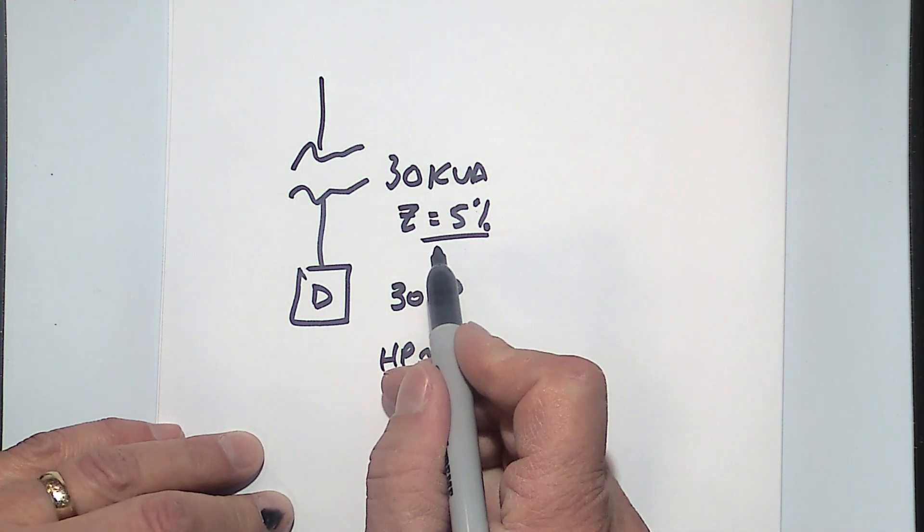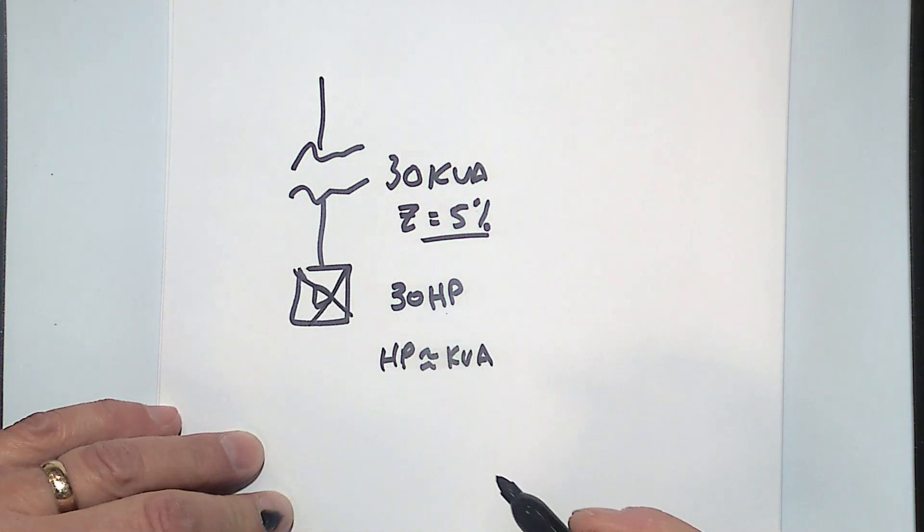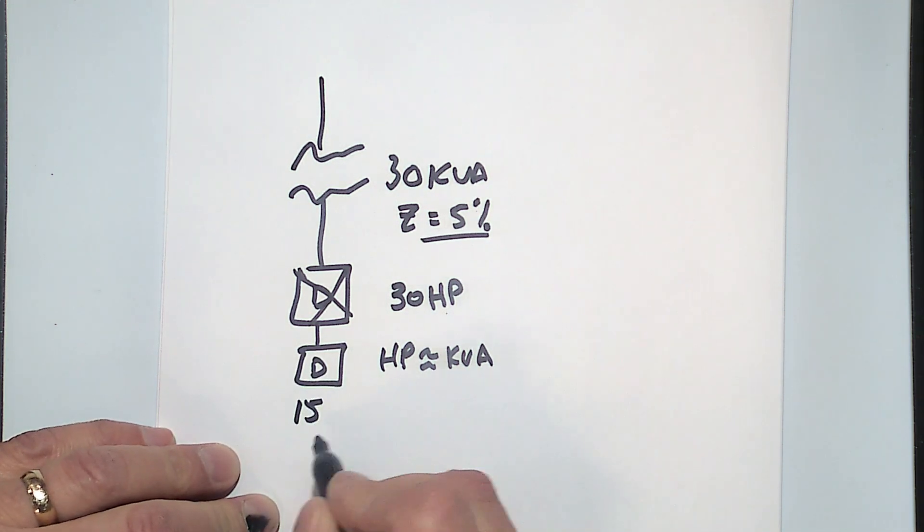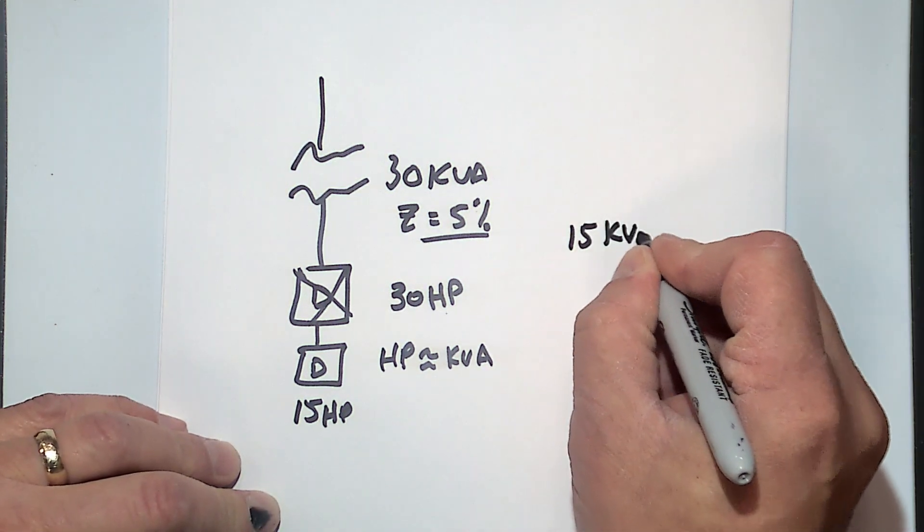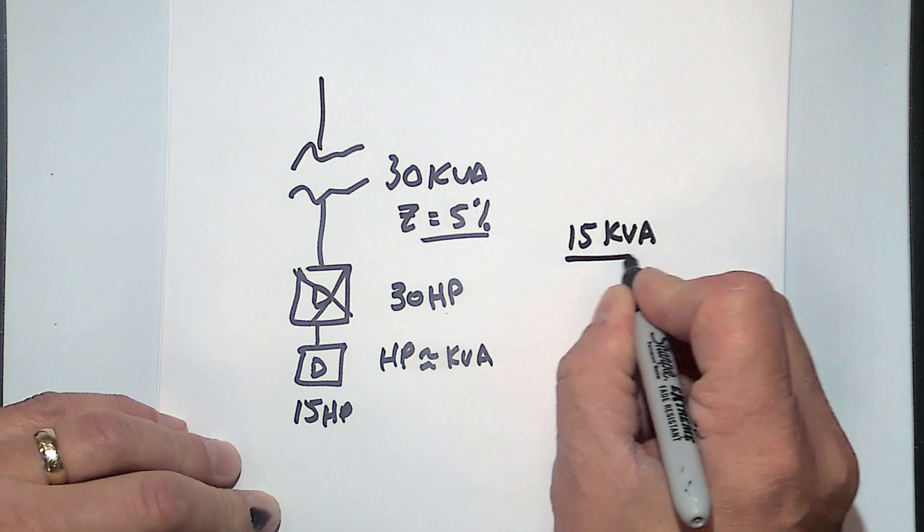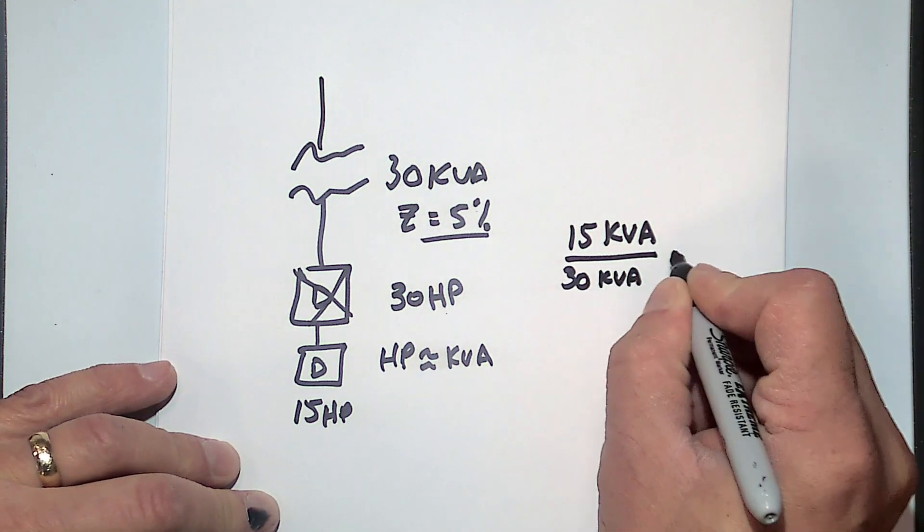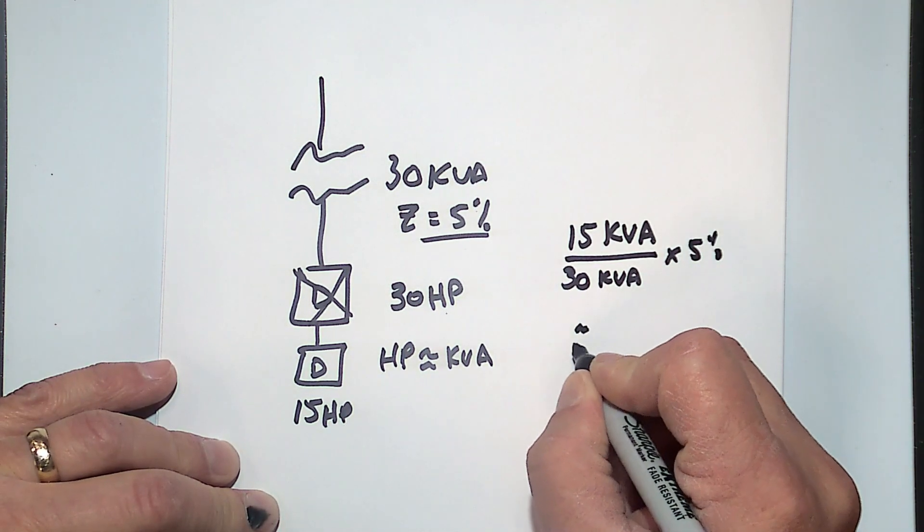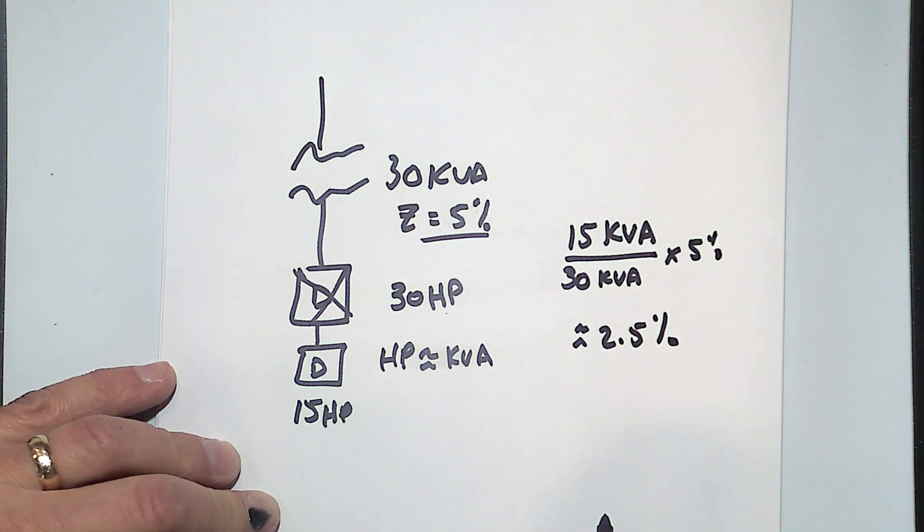But what happens is, what if this drive is not 30 horsepower, what if I have a 15 horsepower drive here? Well, the equivalent impedance then would be 15 kVA, because we said kVA is equivalent to horsepower, over 30 kVA, times the 5%. So I'd effectively get about 2.5% impedance or reactance in front of that drive.